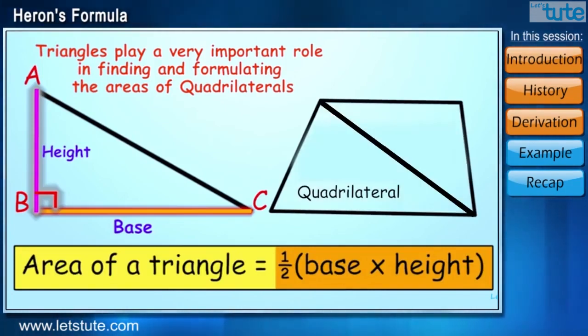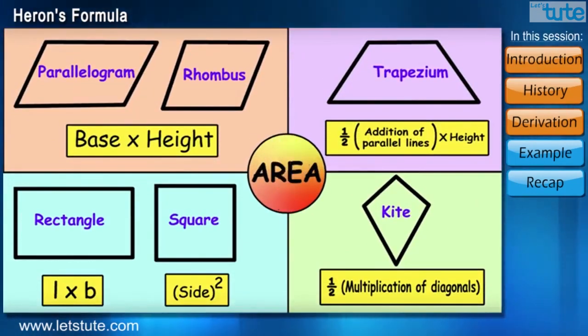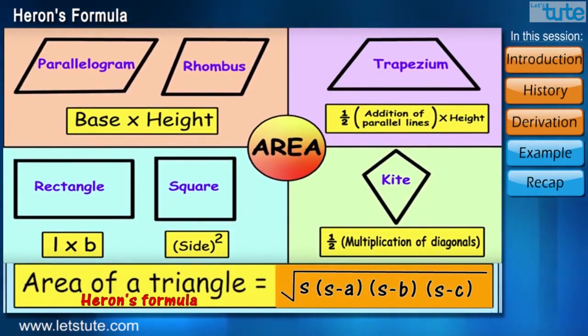Now, here we are going to use Heron's formula to calculate the area of quadrilaterals. Now, you may ask, which type of quadrilateral? It may amaze you, but using this formula, we can calculate the area of any type of quadrilateral if all the required lengths are given.